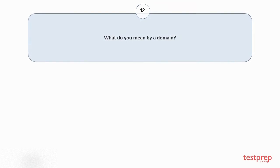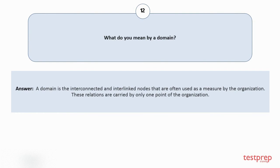Question number 12: What do you mean by a domain? A domain is the interconnected and interlinked nodes that are often used as a measure by the organization. These relations are carried by only one point of the organization.